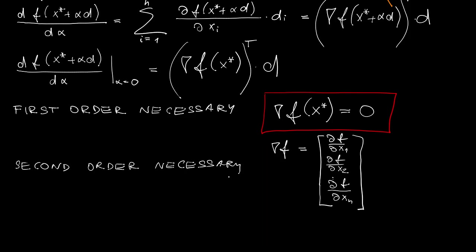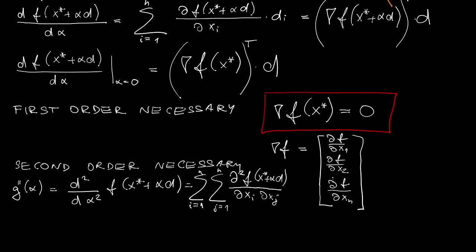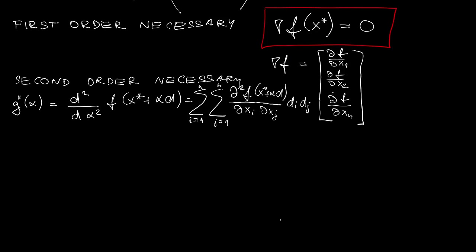The second order necessary conditions. Again, let's go back to our function g. And we do the same that we did above. It's just that now we consider the first derivative of the first derivative. So we apply this chain rule twice. And we have this double sum of second partial derivatives, including the mixed terms, which again, if we evaluate at alpha equal to 0, specializes to this particular expression.